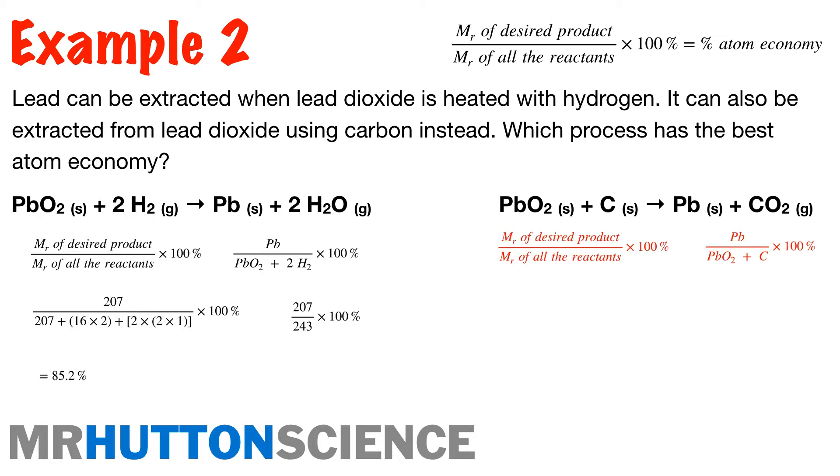So now we're going to see whether process two on the right here has a better atom economy or not. And so again, we just put our formulae into the equation. I like to do it this way, where I put the actual reactant, the desired product over the reactants as Pb over PbO2 plus C. So I think it just gives you a good idea and it makes sure that you know exactly which things you need to be adding up. So there we go.